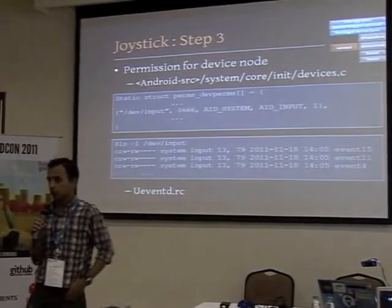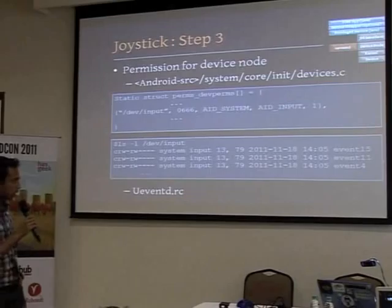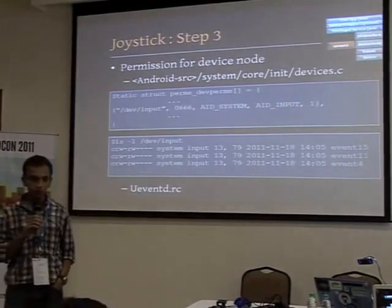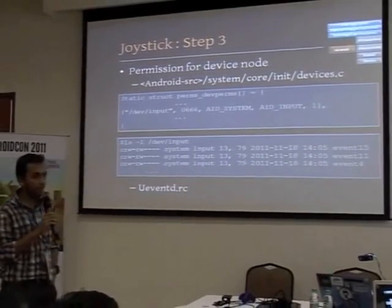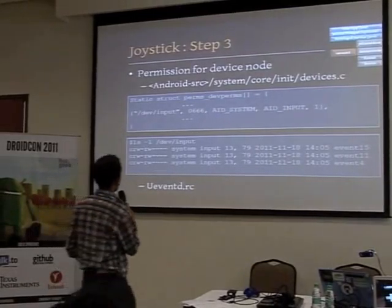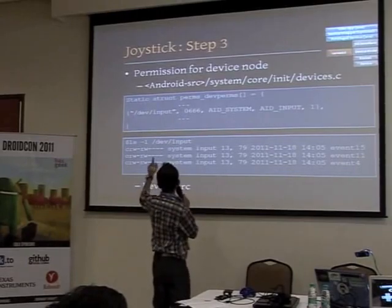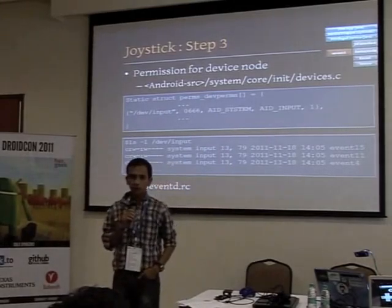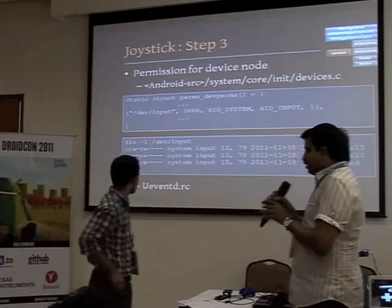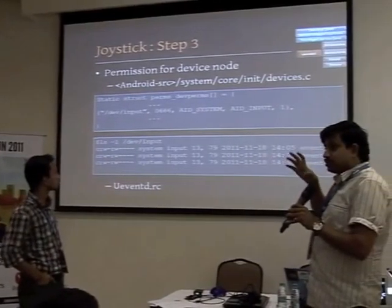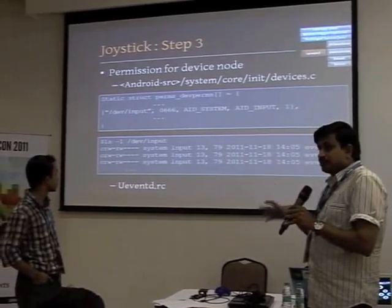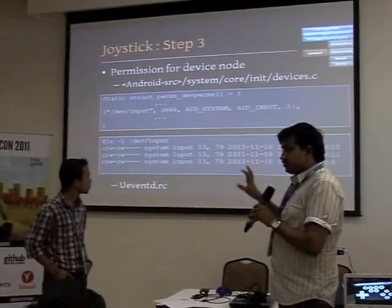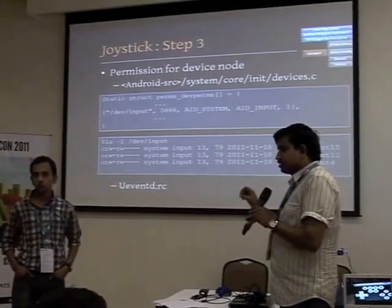Now you have JNI code that can communicate with the device. But /dev/input has permissions — you need your app to have permissions to access that device. Like Shree talked about, you have UEVENTD that manages the permissions for your device nodes. What I've done is change my input device permissions to AID_system — that's the Android user 'system' which has access to most Android features. This is done in system_core/init/devices.c, which is part of the Android source code — here we're actually modifying the Android source code to change the permissions of the device node so it can be used with the daemons we're going to run next.